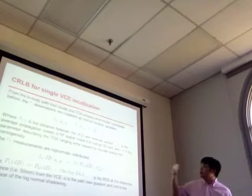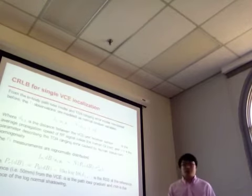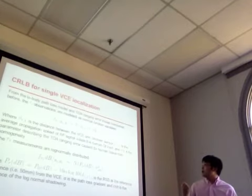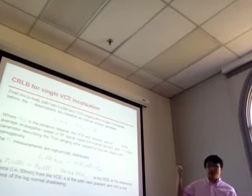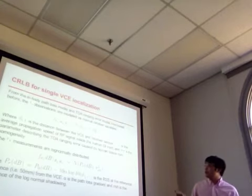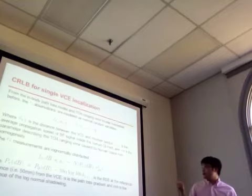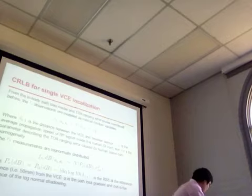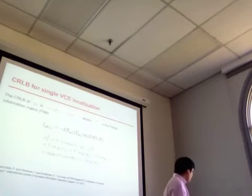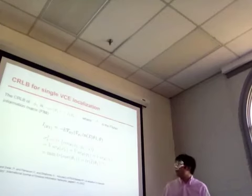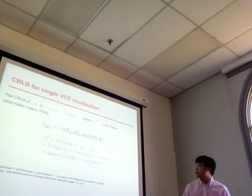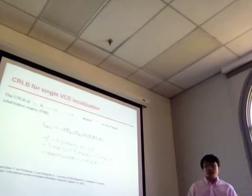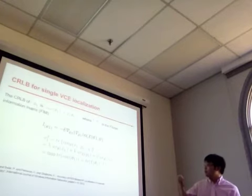For the observations: if we observe time-of-arrival, it follows a Gaussian random variable based on the ranging error model; if we observe received signal strength, it follows a log-normal distribution according to the path loss model. We then developed the Fisher information matrix for the Cramér-Rao lower bound, and the variance of the capsule location estimator is the trace of the inverse of the Fisher information matrix.